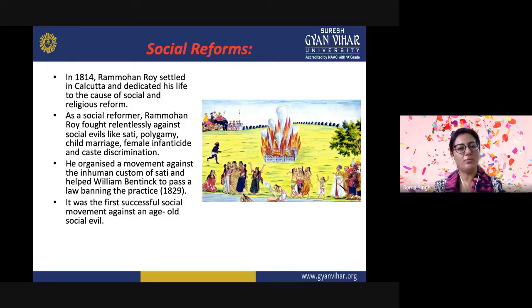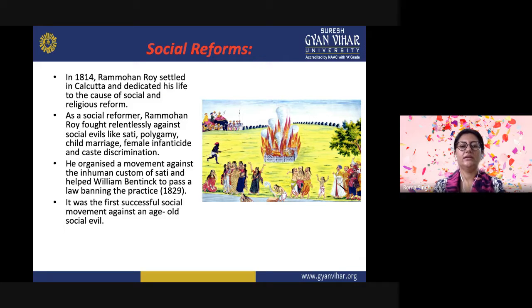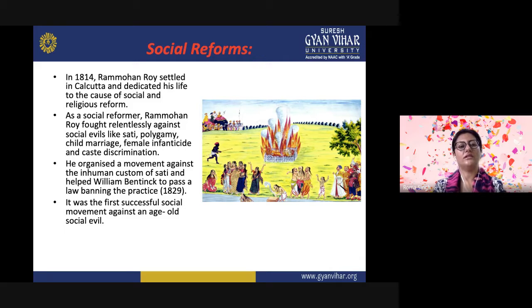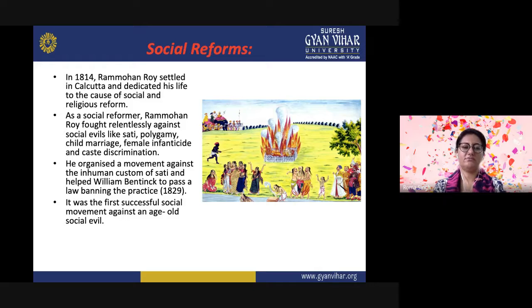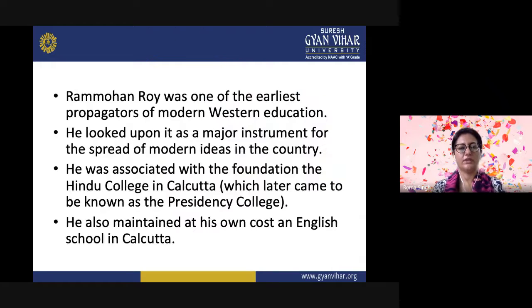As a social reformer, Ram Mohan Roy fought relentlessly against social evils like the Sati system, practice of polygamy, child marriage, female infanticide, and caste discrimination. He organized a movement against the inhuman custom of Sati, having personally witnessed his elder brother's wife being forced to perform Sati. This made him agitated at a very young age. He helped Lord William Bentinck, the Governor-General, to pass a law banning the practice in 1829. This was the first successful social movement against an age-old social evil.